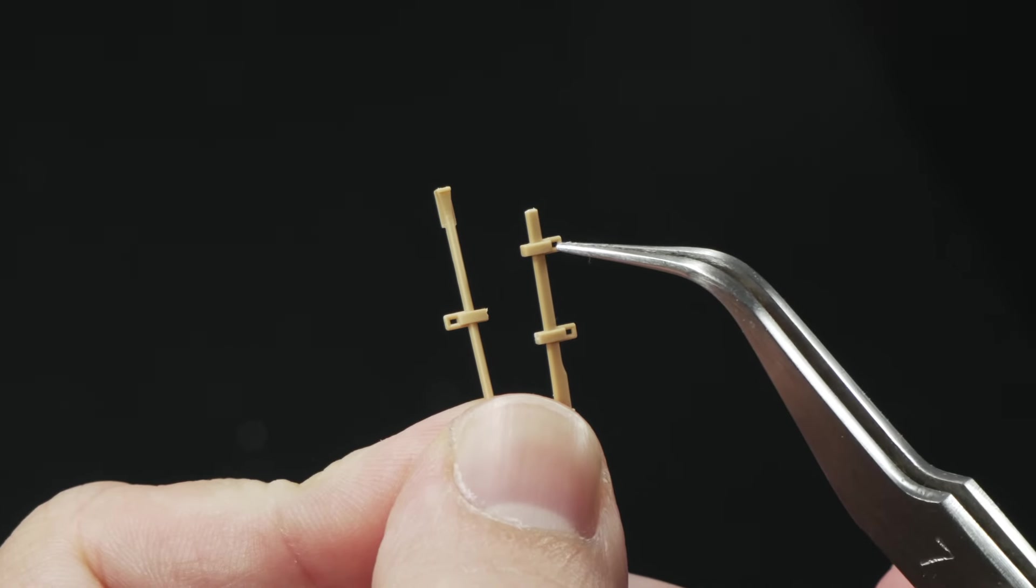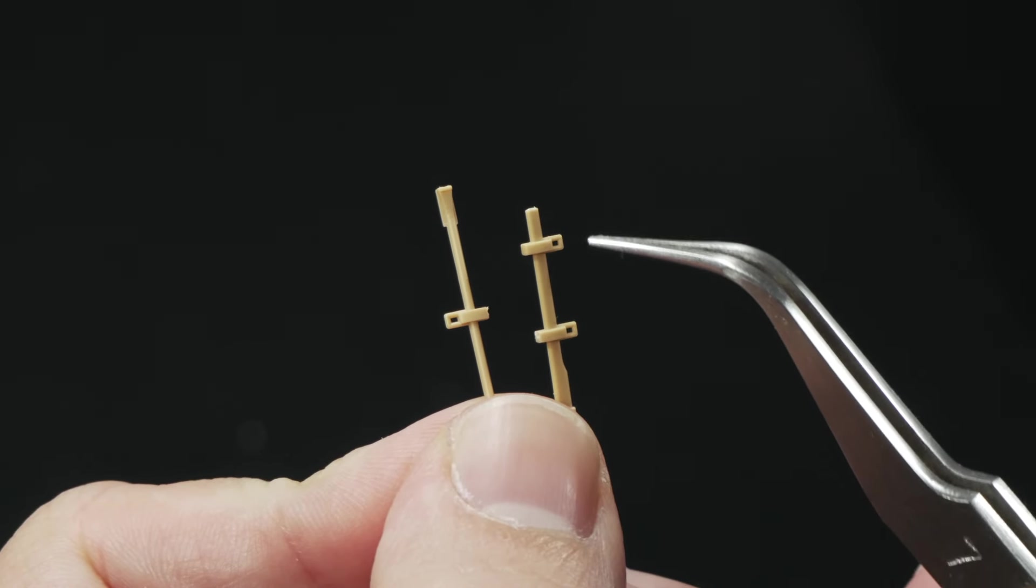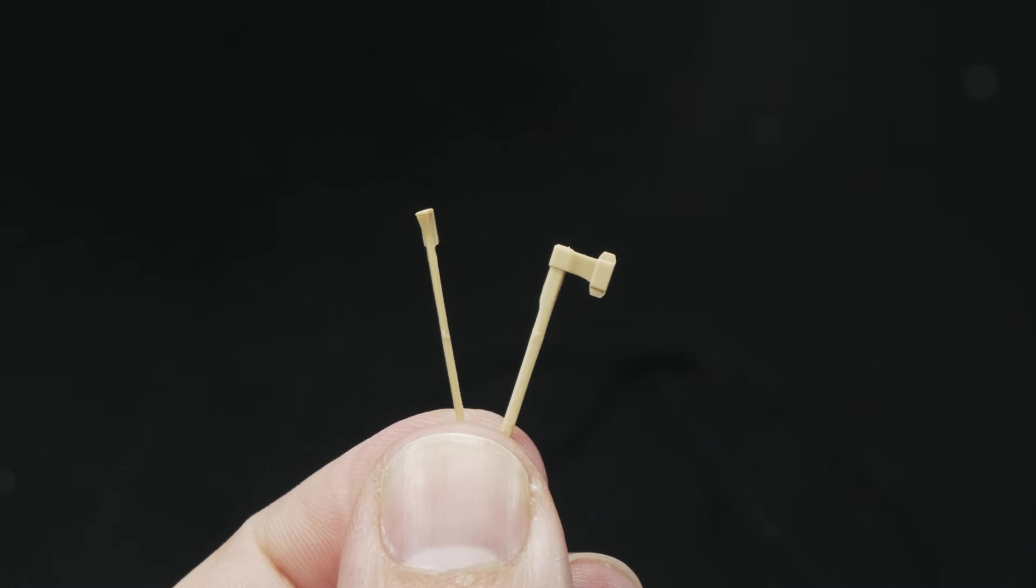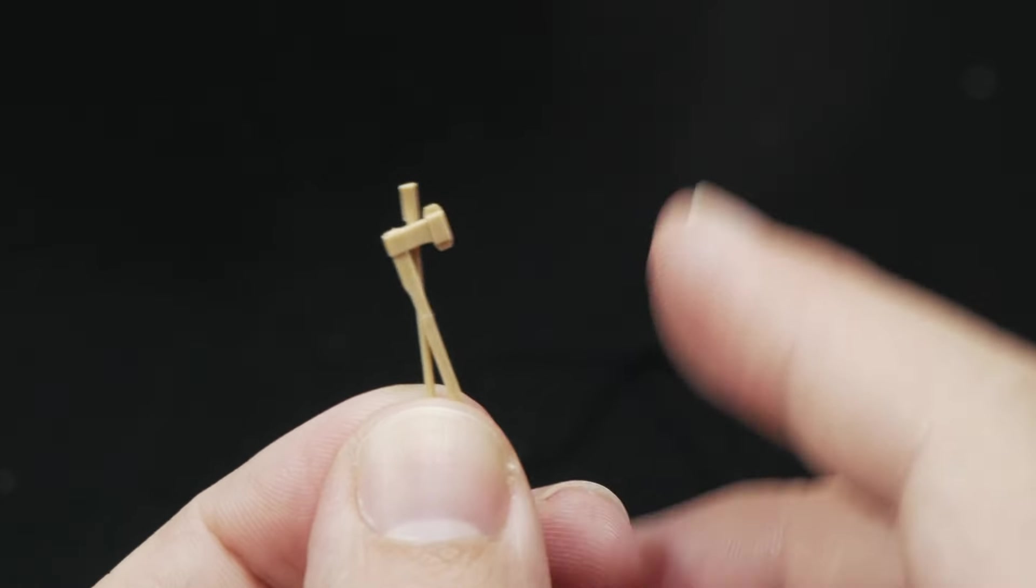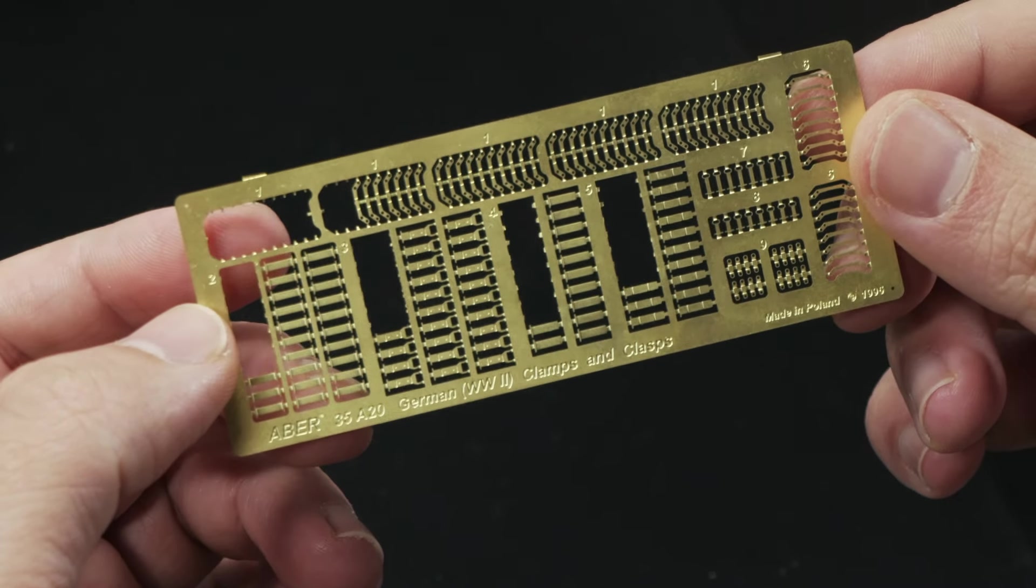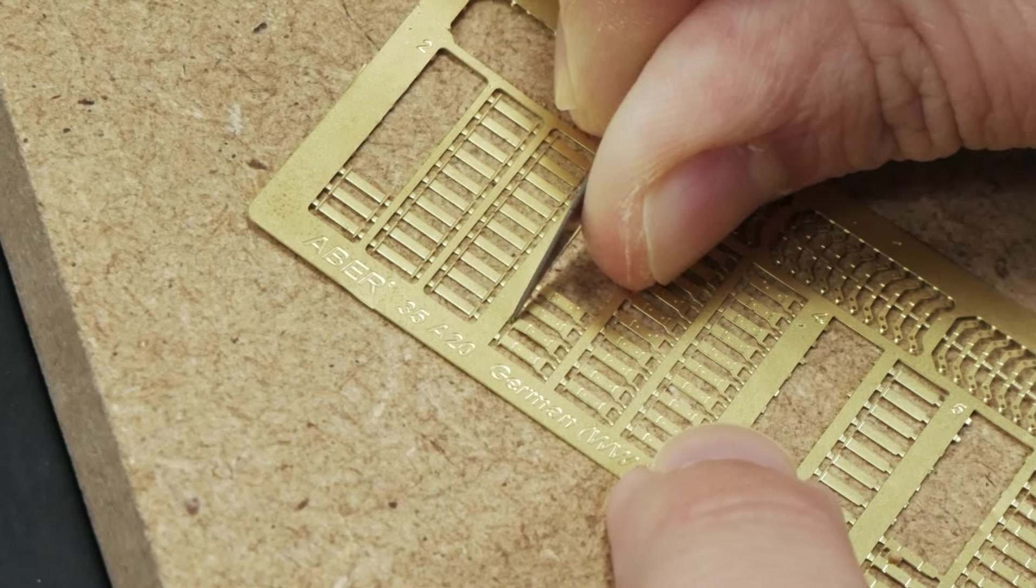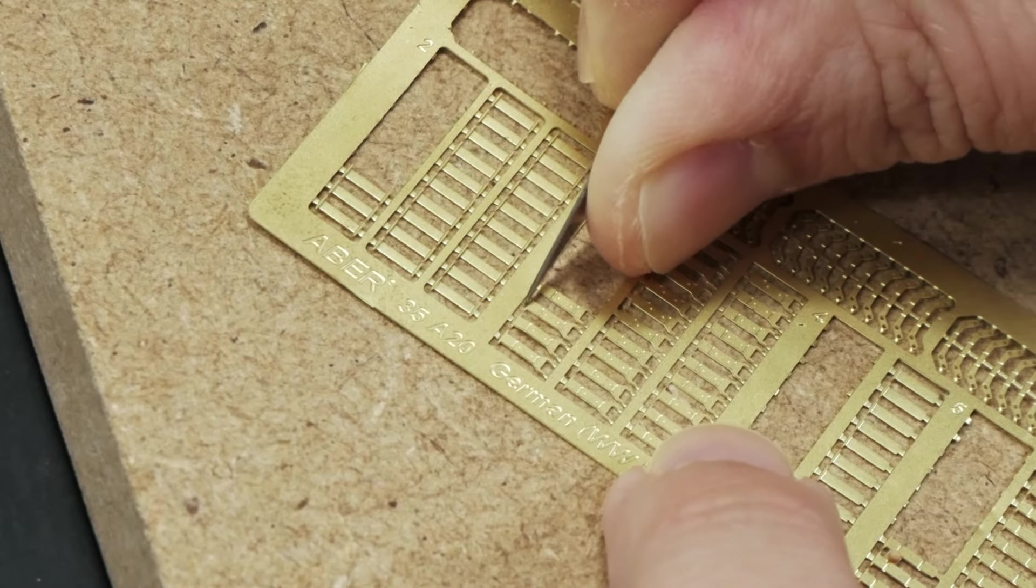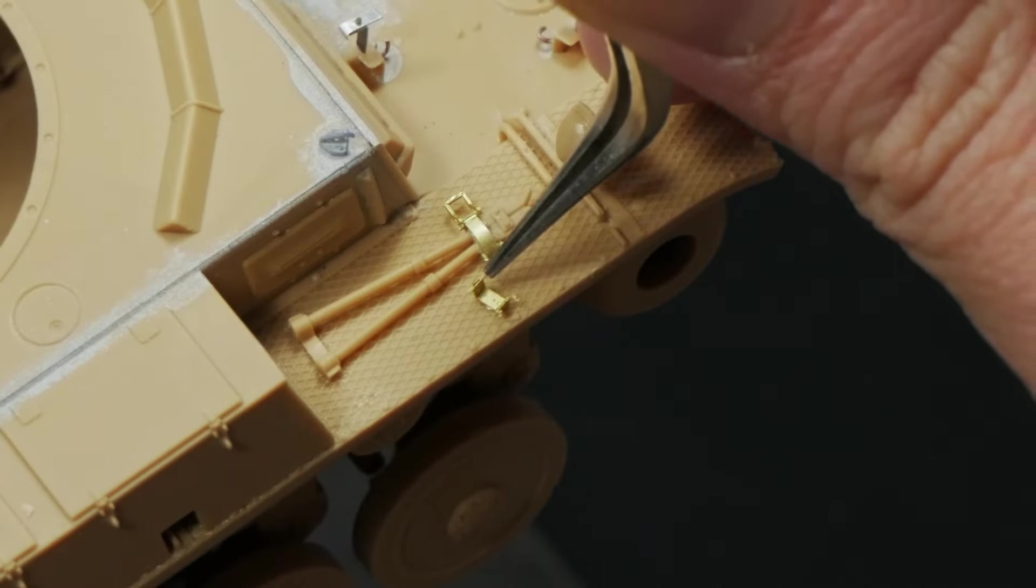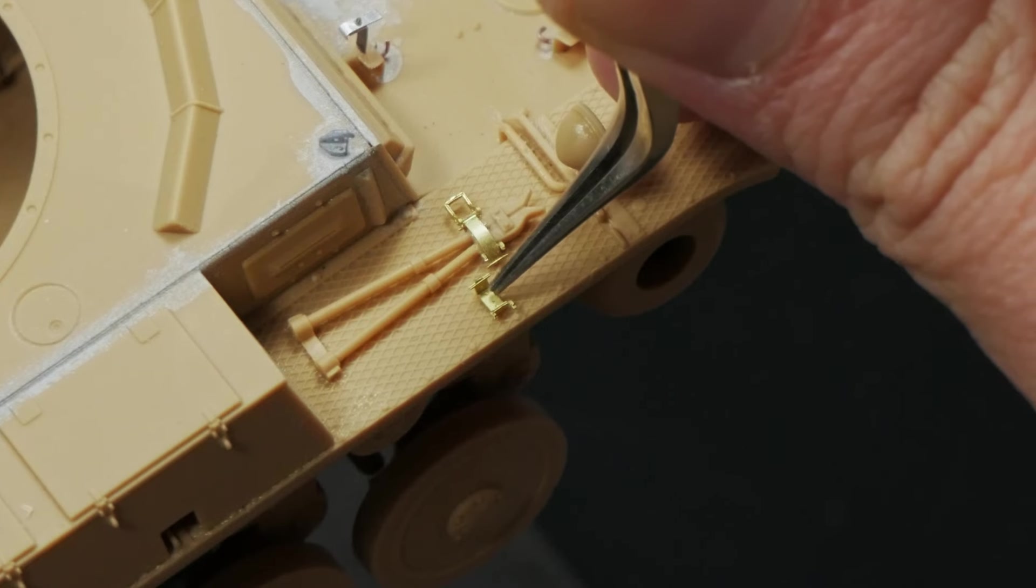Some of the most eye-catching details of scaled models are the tools spread around them. Most recent kits include these plastic clamps molded in the same piece, but for this project I find them out of scale. For extra detailing the tool clamps, I took this old sheet from Aber for representing the tool clamps.